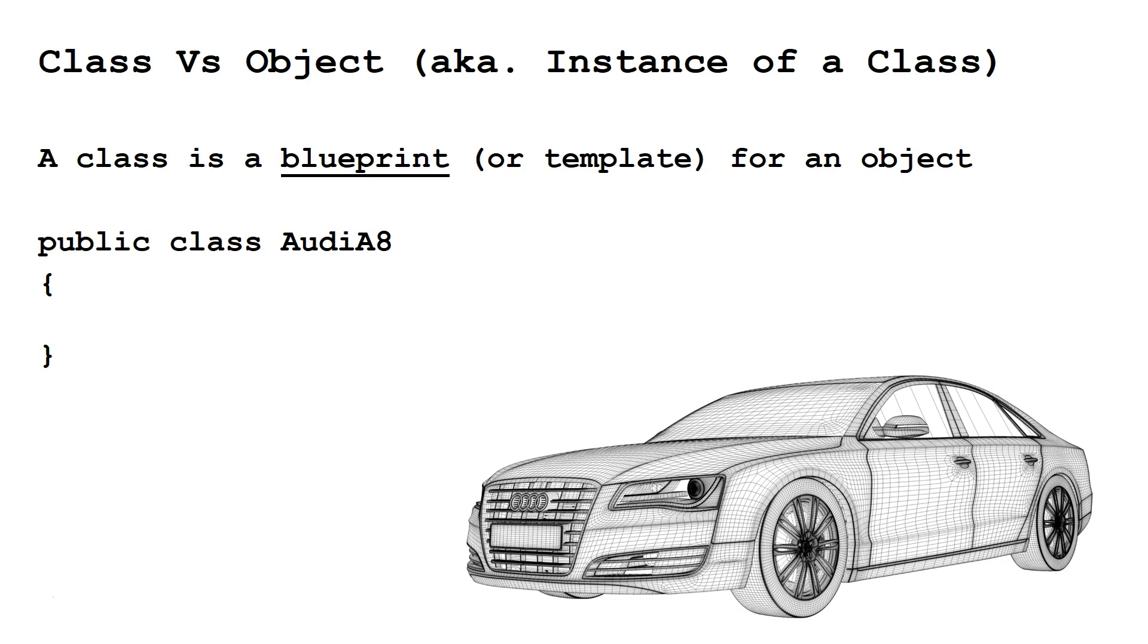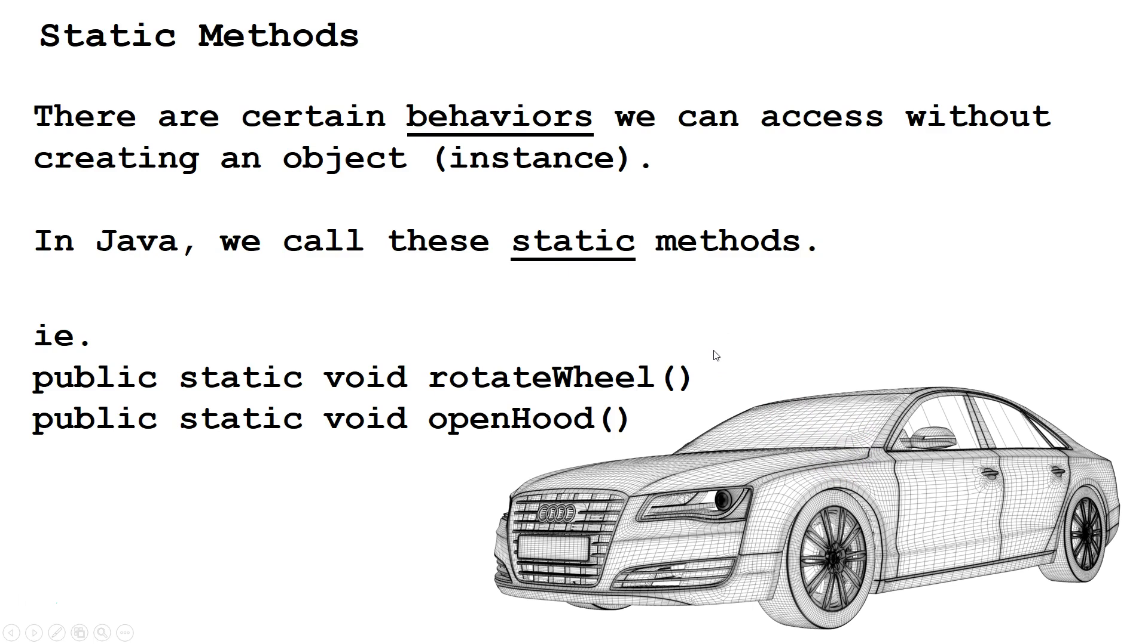So what is a class? A class is a blueprint or a template for an object. So I use this picture as an example. This is not an actual car, but it's a blueprint or a template for the car.